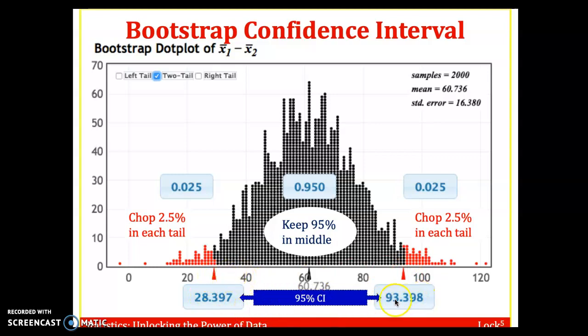All right, so that is one way to create a 95% confidence interval. This is the chapter three method. The other approach we talked about is to bring in this standard error, 16.38.